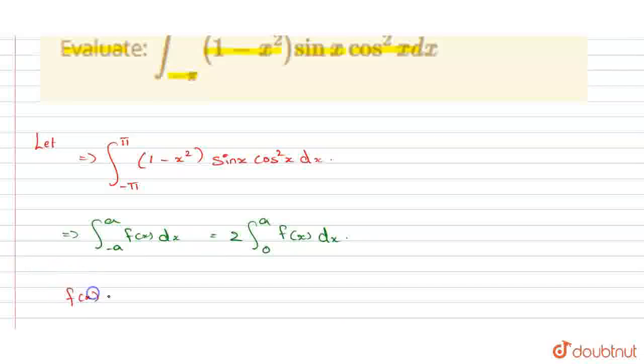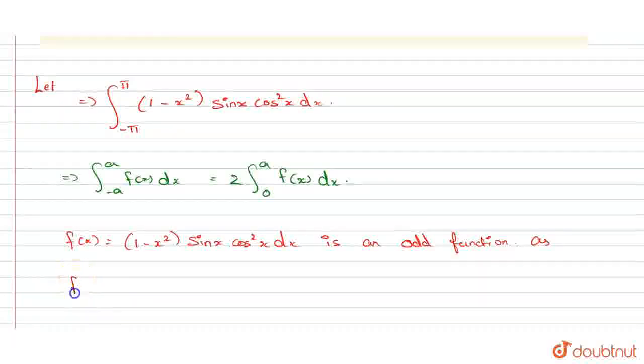f of x equal to (1 minus x square) sin x cos square x dx is an odd function as f of minus x equal to minus (1 minus x square) sin x cos square x equal to minus f of x.